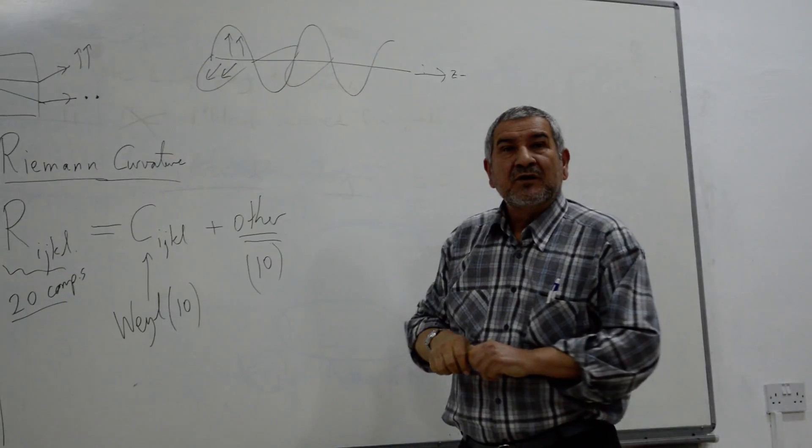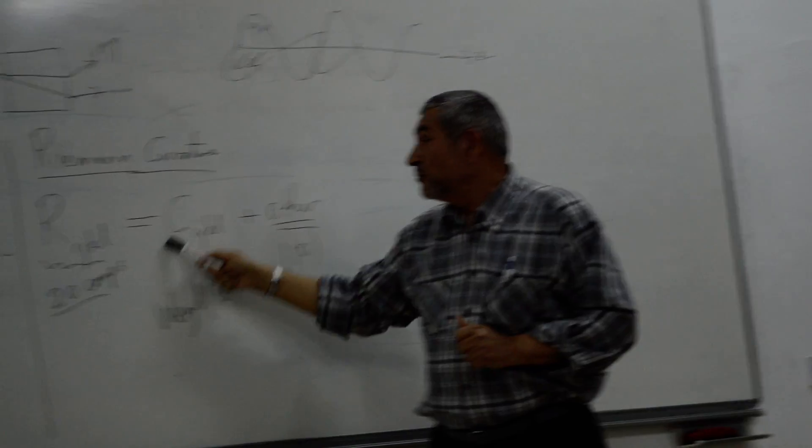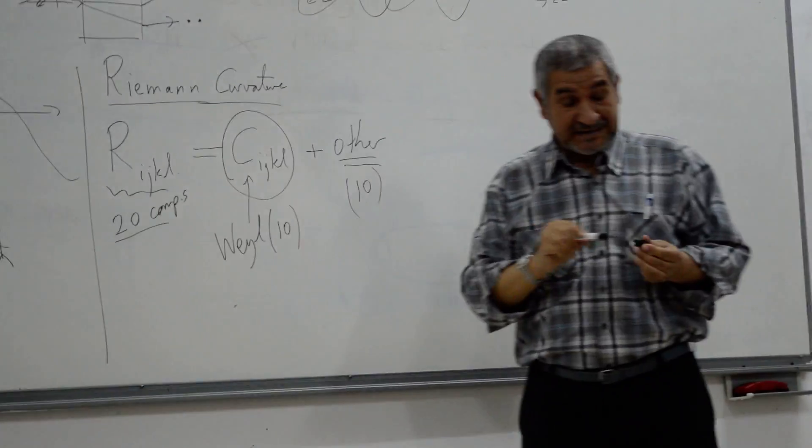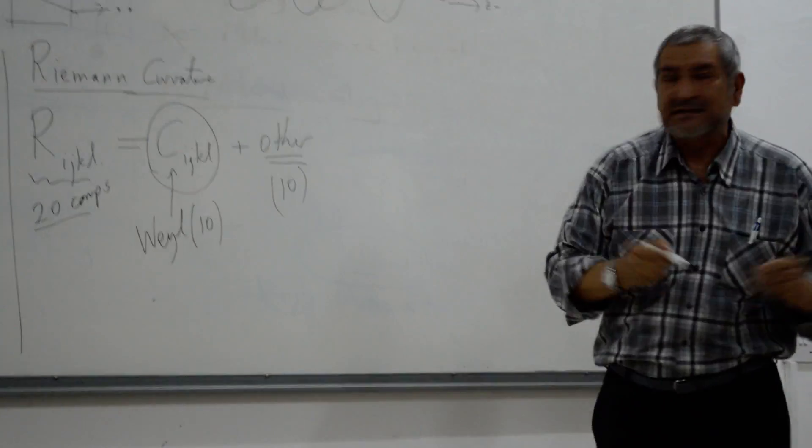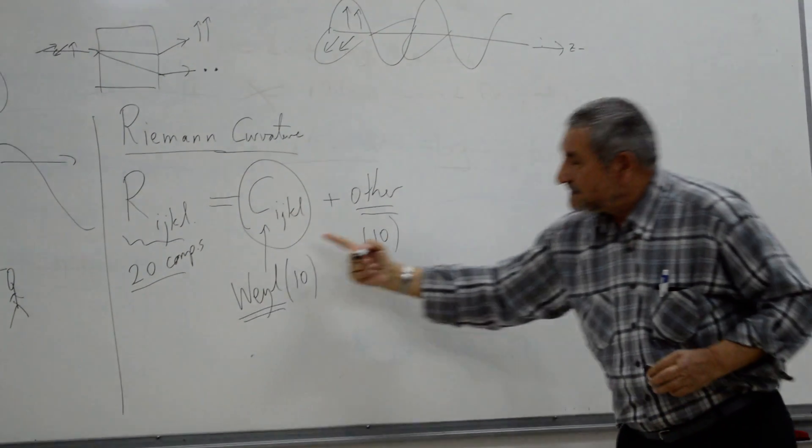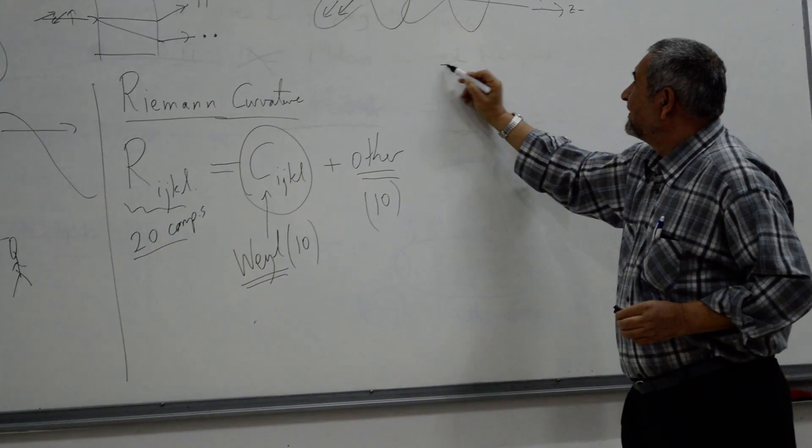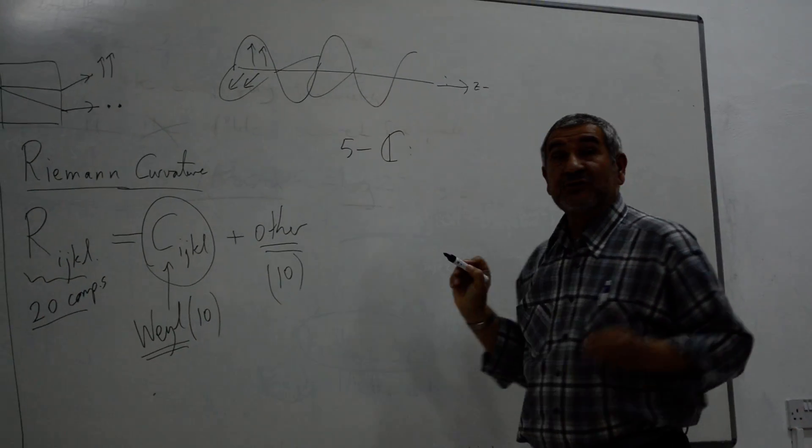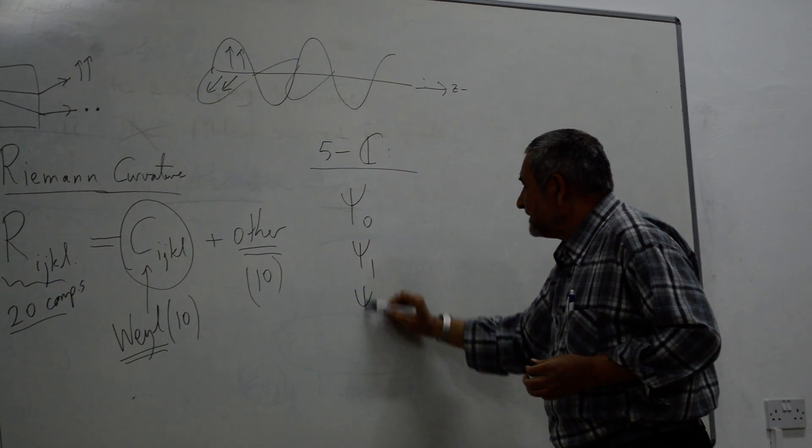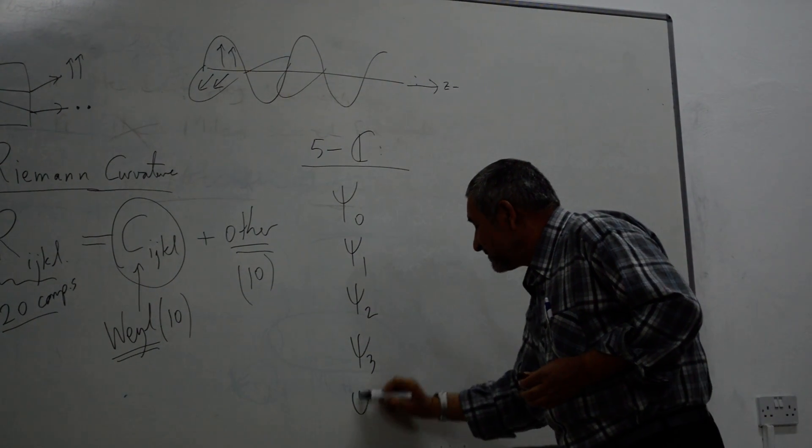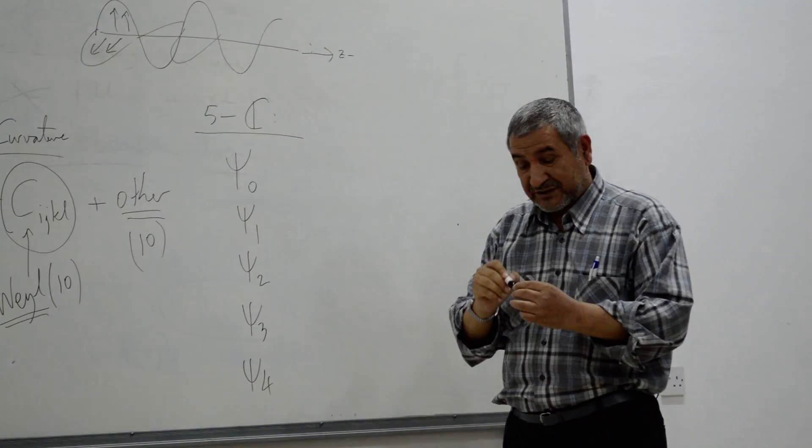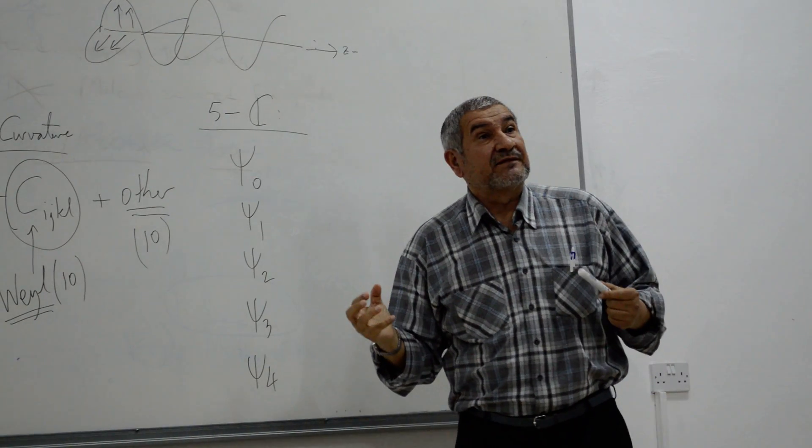Now, similar to this picture, if we want to talk about gravitational waves, we will concentrate on the Y curvature. This part. Because it represents pure gravitational waves. The name of Y - we can formulate these 10 parameters by 5 complex functions. I can call them Psi 0, Psi 1, Psi 2, Psi 3, Psi 4. These are 5 complex functions that characterize the gravitational waves.